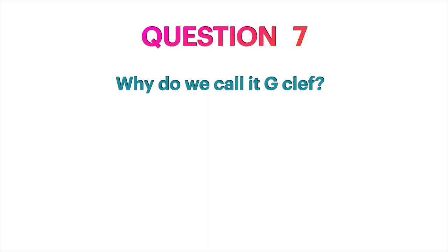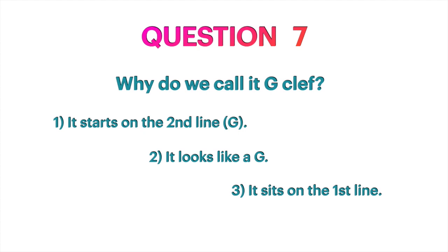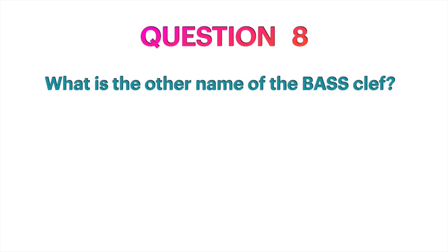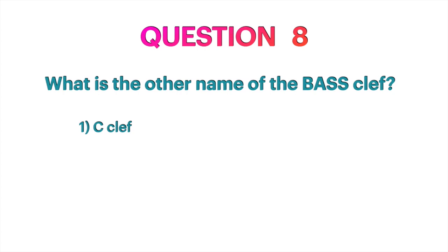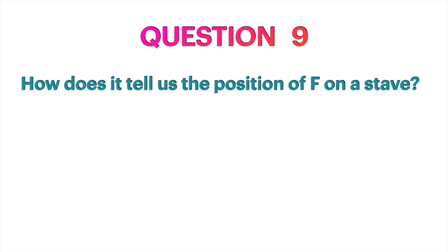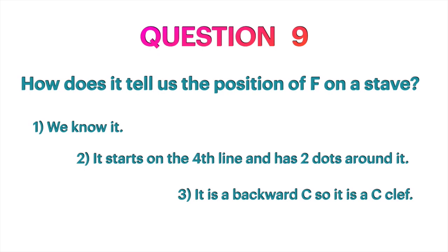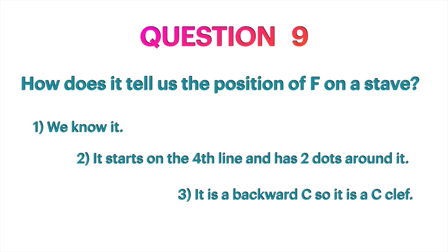Question 7: Why do we call it G clef? It starts on the second line G? It looks like a G? It sits on the first line? Question 8: What is the other name of the bass clef? Question 9: How does it tell us the position of F on the stave? We know it? It starts on the fourth line and has two dots around it? It is a backward C, so it is a C clef?